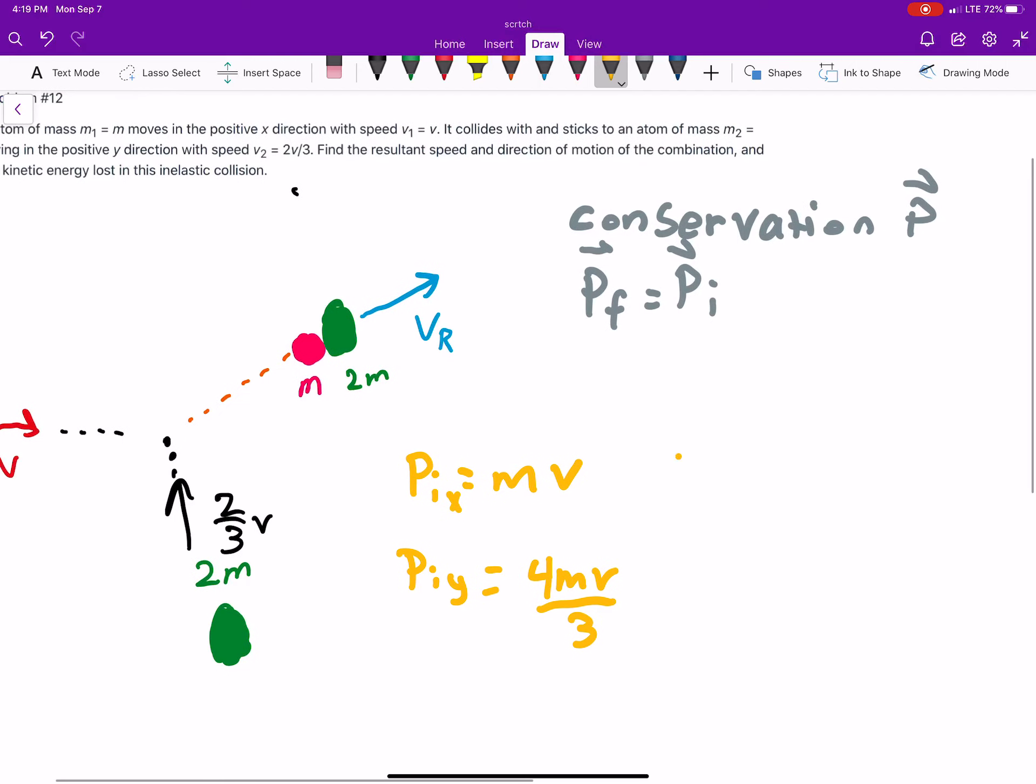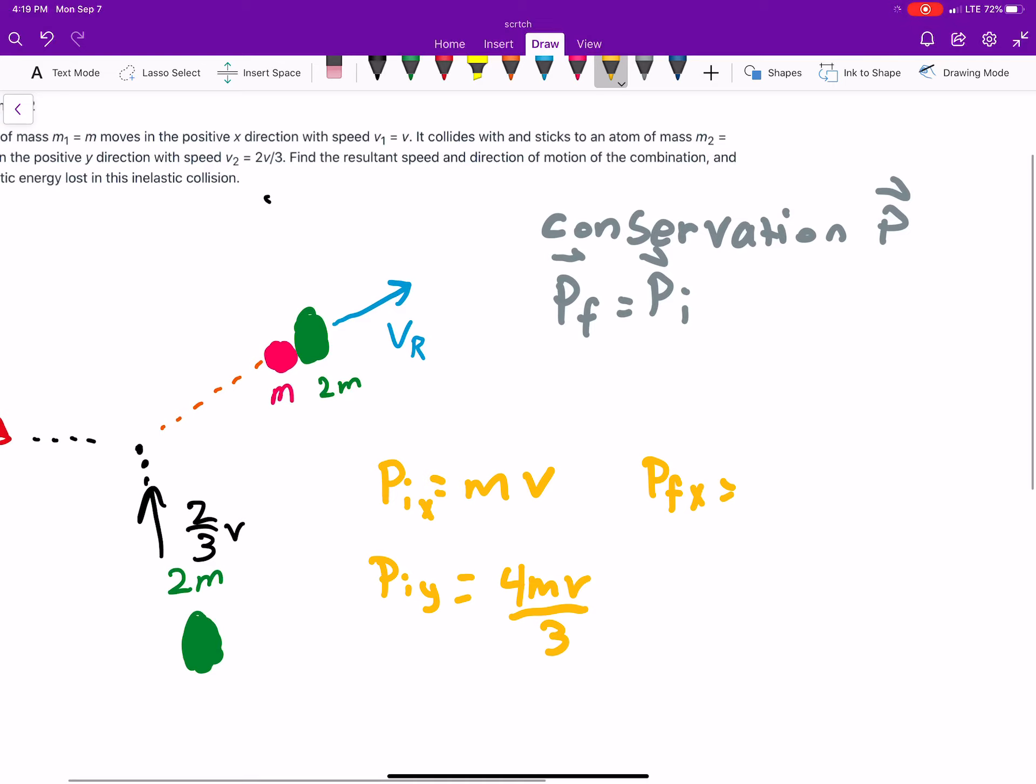And there's also final momentum. So, momentum final in the x is equal to mass times velocity. That's going to be m plus 2m, because we're adding our mass, so that's 3m. And then, times velocity in the x direction, and this is resultant velocity. So, I just put a subscript rx. The velocity we're looking for in the x direction. These are all vectors.